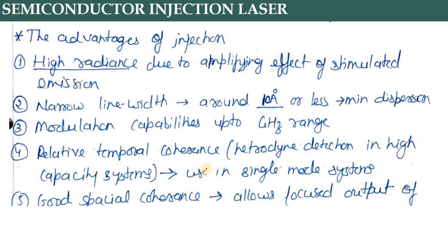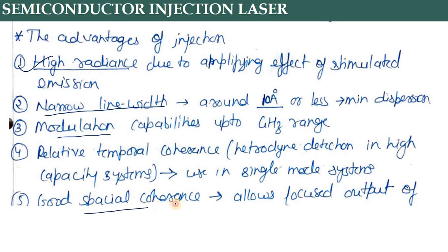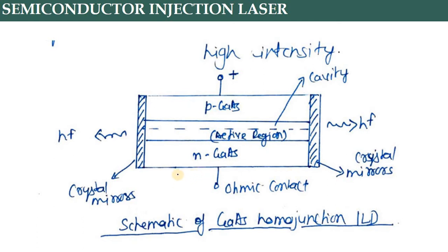ILD को simply injection laser भी कहा जाता है। इनकी advantages यह हैं: semiconductor में spectrum जो था उसमें FSR निकाला था, उस FSR की width काफी कम होती है - that means we can work in single mode. Coherent source के लिए बहुत favorable होती है, modulation capabilities बहुत अच्छी रहती है, relative temporal coherence है - high capacity system में single mode operation में काफी अच्छे से इस्तेमाल कर सकते हैं। Spatial coherence भी अच्छी होती है जिससे focused light output मिलती है।